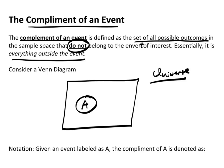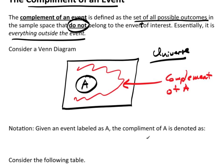All of this is outside of A. So this, everything outside the A, is the complement of event A. Now, given an event A, the complement of event A is denoted simply as A with a superscript of C.